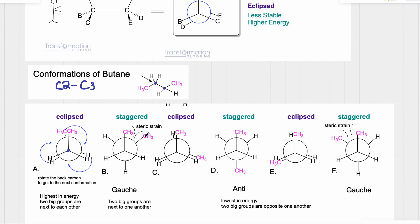Then we rotate again: this methyl group will be behind this hydrogen, this hydrogen behind this hydrogen, and this hydrogen behind this methyl group. We keep rotating, going from eclipsed to staggered, eclipsed to staggered, and that's how you get all of your conformations.